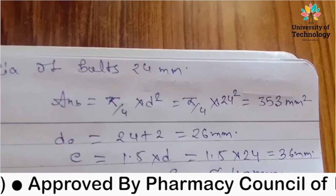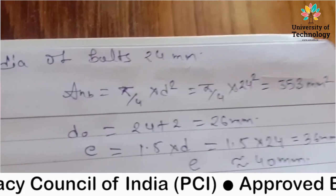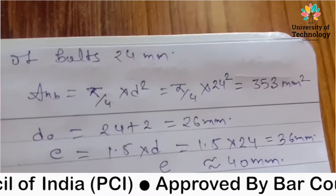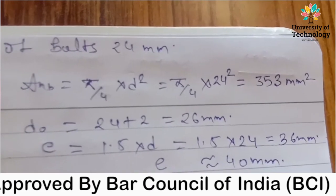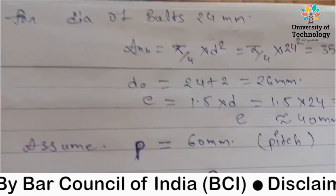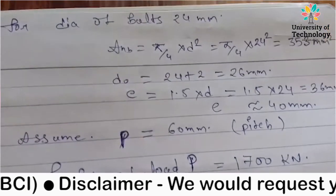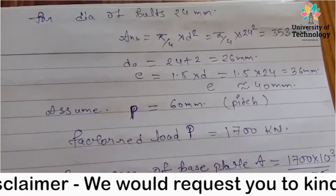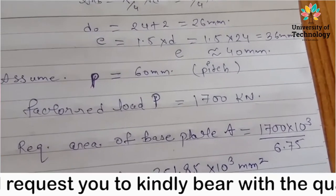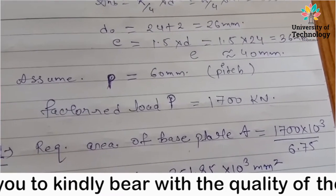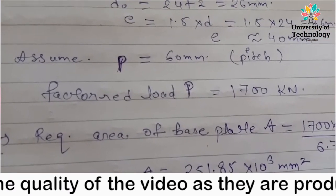E value is 1.5 into D and 1.7 into D, two conditions are different. We will take normal conditions 1.5 into D, E value similar to 40mm. Now pitch assume 60mm minimum. Factor load 1700. Step 1: Required area of base plate A equals to P upon 0.45 into FCK.